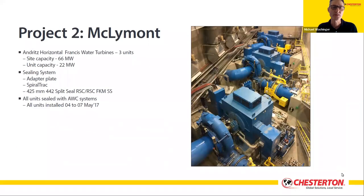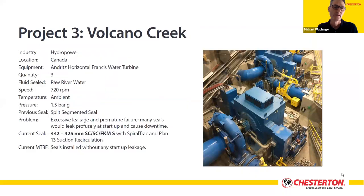With success on unit seven, eventually all nine units at Forest Curve were converted over to a mechanical split seal design with the same result. With the success of Forest Curve, all three units at McLiamont were retrofitted with a similar design mechanical seal — again with the same result: no leakage at startup or during running, and minimal flush requirement. Finally, all three Volcano Creek turbines were converted over to a mechanical split seal design. All of these site installations have been running trouble-free to date with no discernible leakage.